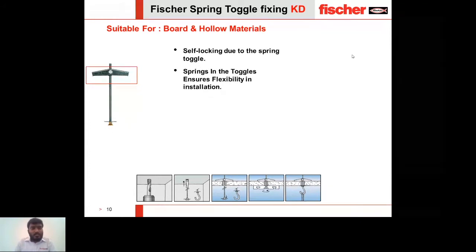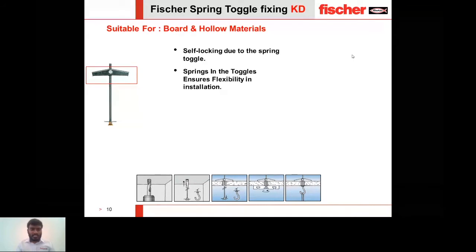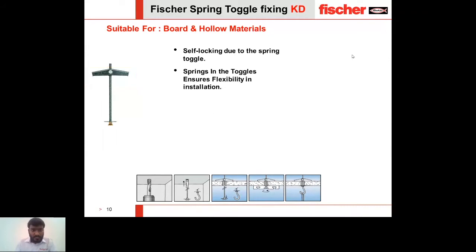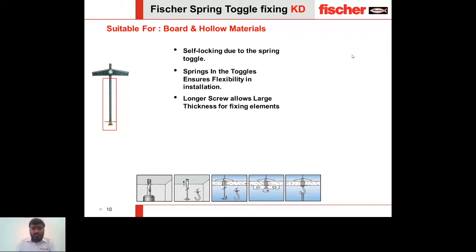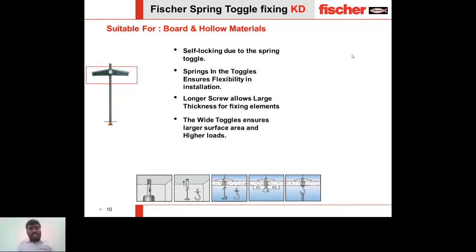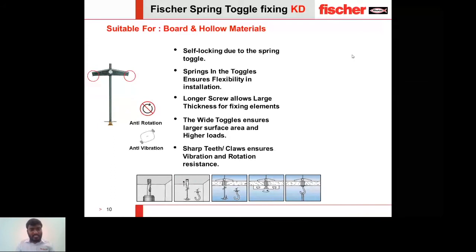There is a short video showing how this spring action works. The anchor also comes with a longer screw, which allows the user to fix larger base thicknesses — for example, a photo frame of 15 mm or 20 mm. The wide wings catch more surface area against the board material, ensuring the load is distributed across a larger area, which enables higher loads. It also comes with sharp serrated teeth ensuring vibration resistance and anti-rotation.